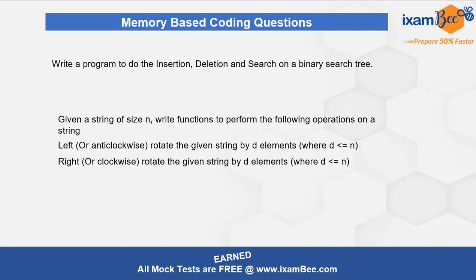The 30-mark question was given with a scenario involving a string of size n, where you had to perform rotations — clockwise or anticlockwise — rotating the elements by d positions, where d is less than or equal to n. You then had to provide the output after the rotation.